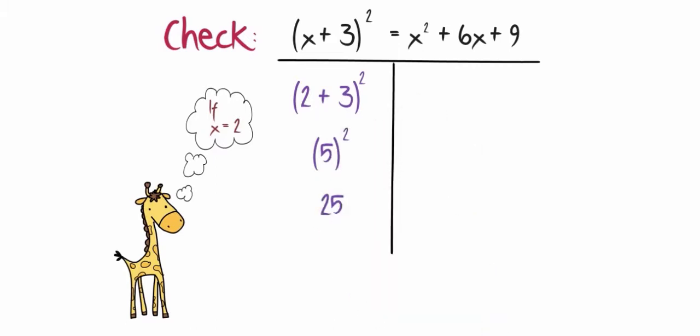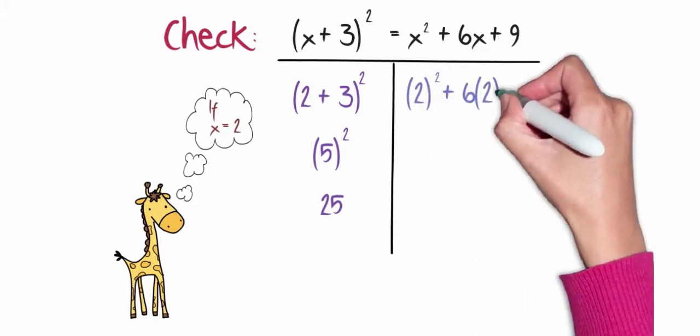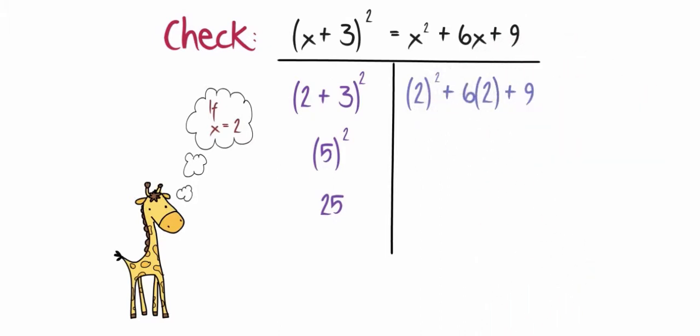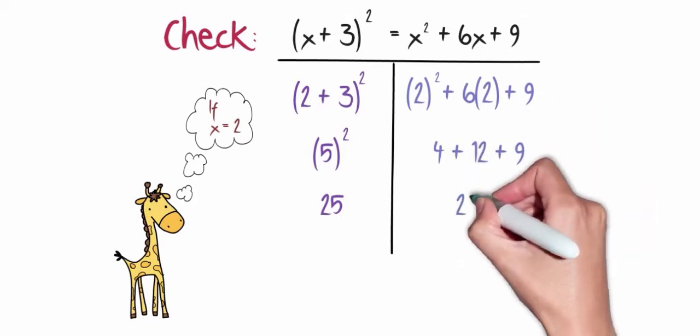Now I'm going to look at what we got when we expanded the expression. So we have x squared plus 6x plus 9. Again, I'm going to plug in a 2 everywhere I see an x. So it becomes 2 squared plus 6 times 2 plus 9. That gives us 4 plus 12 plus 9 for a total of 25.